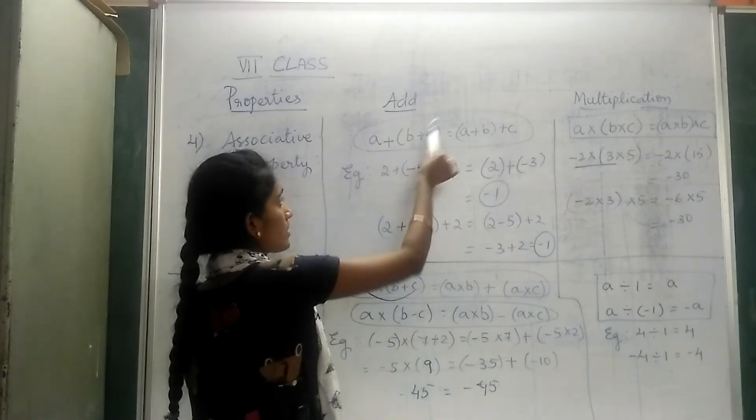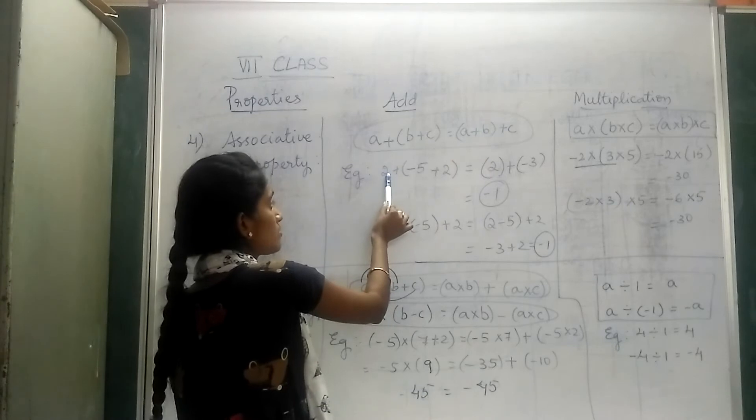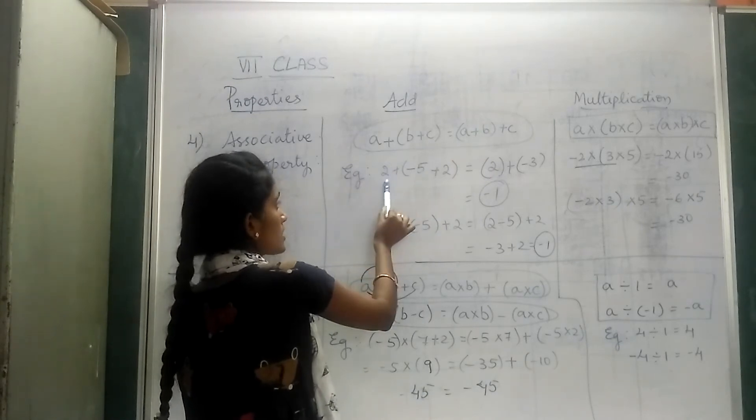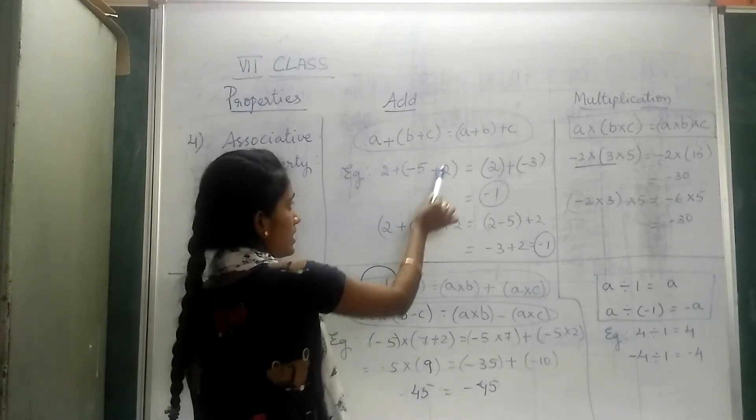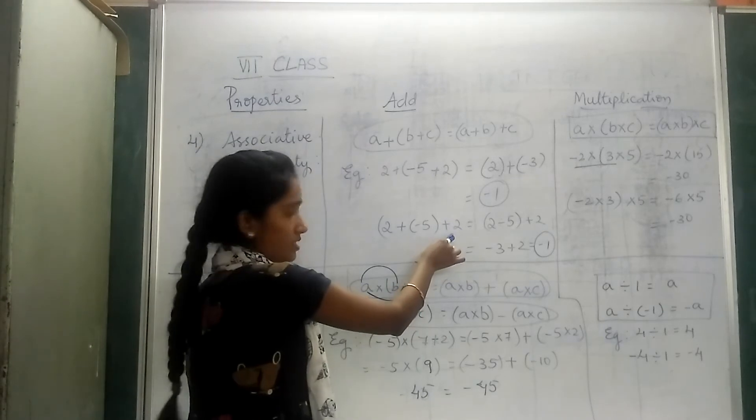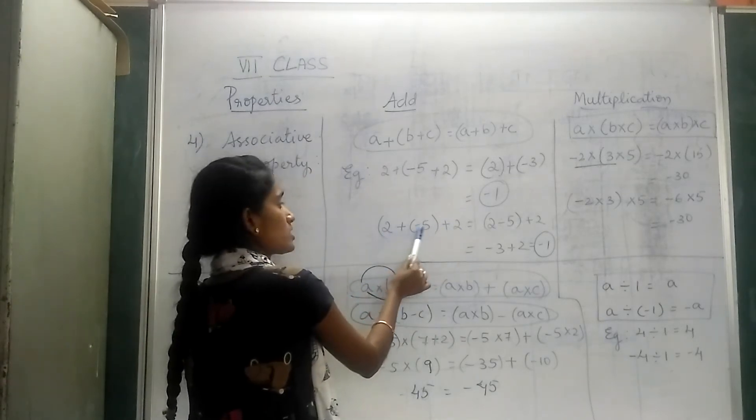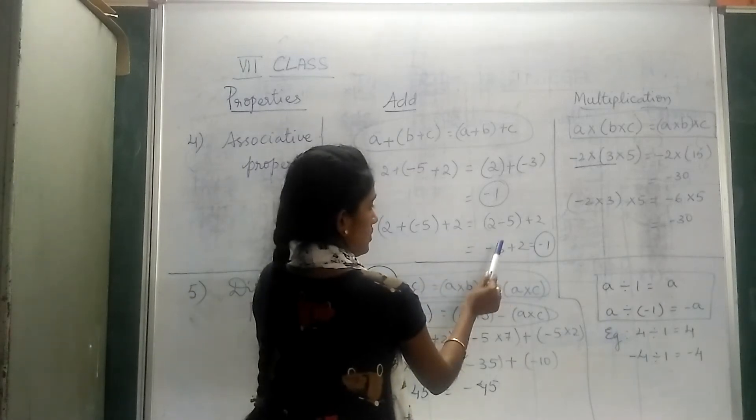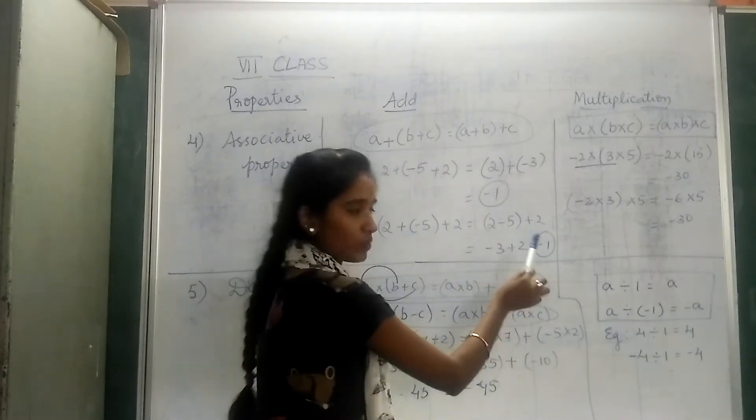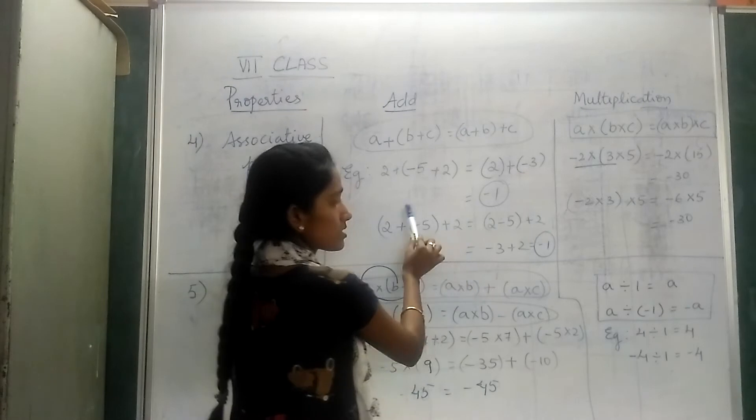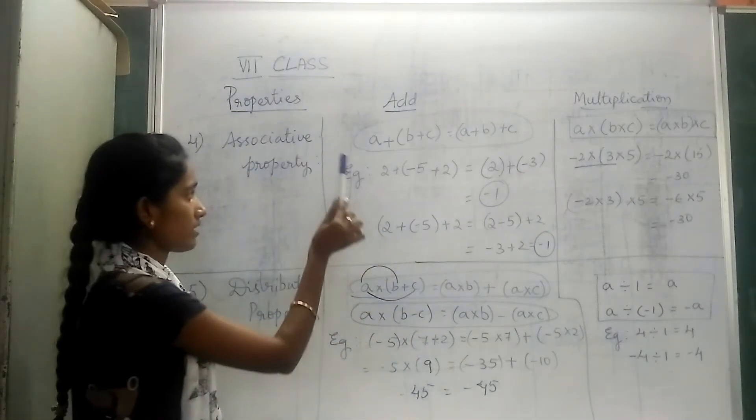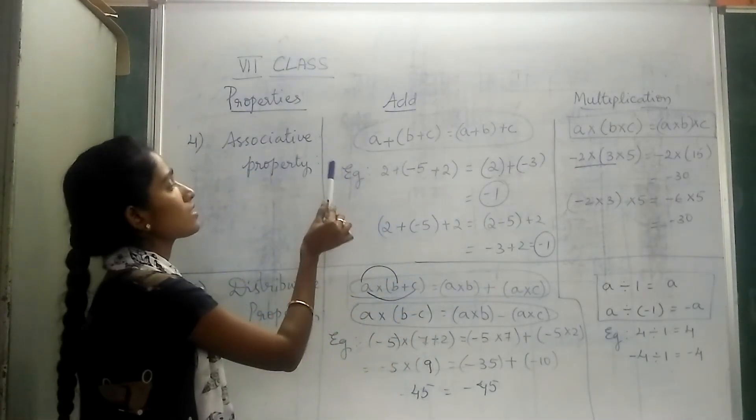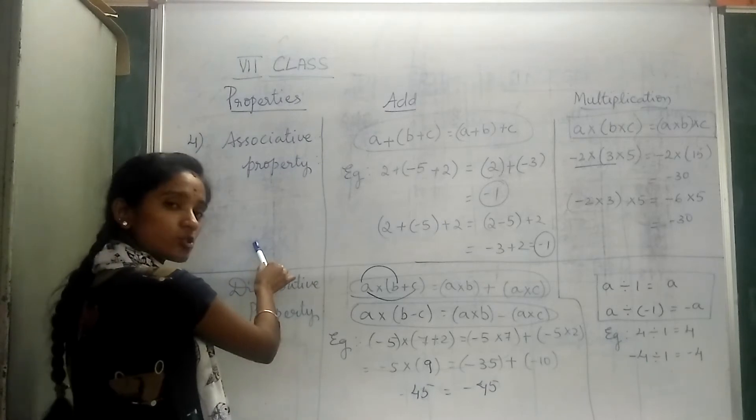With the same number when we write it in this form, I am adding this first: 2 + (-5), and then I am adding the outer number, plus 2. So, 2 + (-5) is -3, plus 2. We got the answer as -1. In both cases, the answer is same. That's why addition satisfies the associative property.